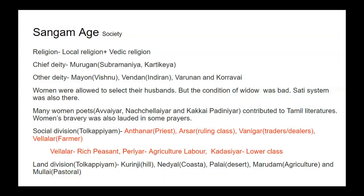The land was divided into five different types by Tolkapyaar: the hill area is mentioned as Kurunji; the coastal area as Nedial; the deserted area as Palai; the plain agriculture area as Marudam; and pastoral plain area as Mullai. This is all about the Sangam age. Thank you.